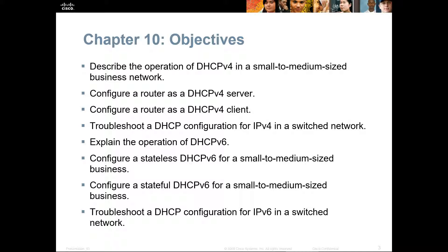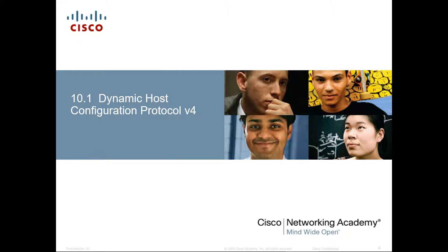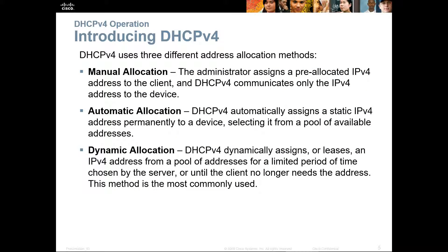DHCP version 4 is specifically for IPv4. DHCP version 6 is for IPv6. This also allows us to talk about SLAAC, which is a version 6 type protocol. DHCP uses three different types of address allocation methods: manual allocation, automatic allocation, or dynamic allocation.